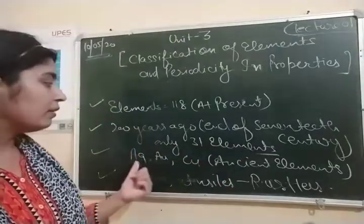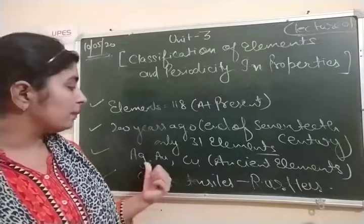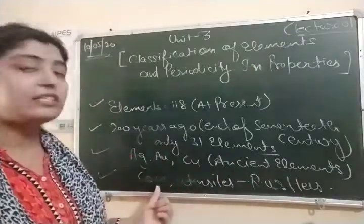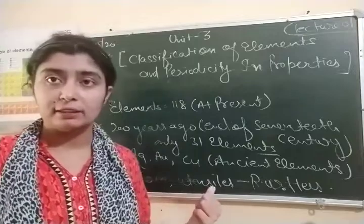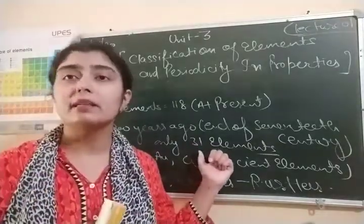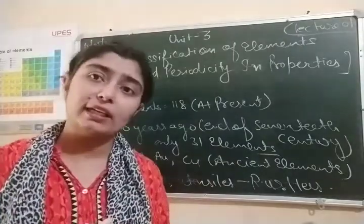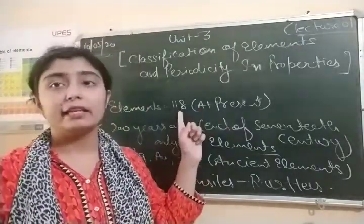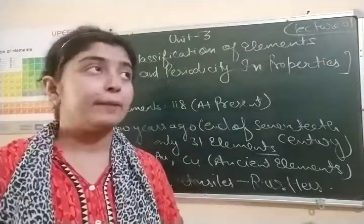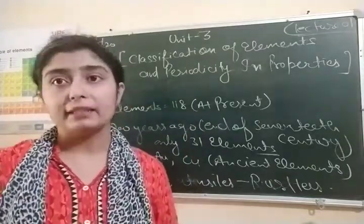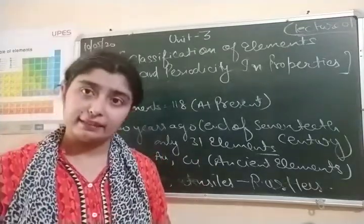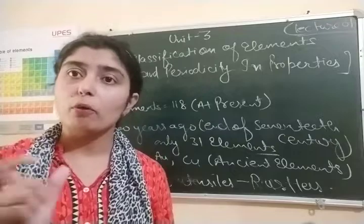At that time, silver, copper, gold - these are not instant elements. These are the elements from which coins were made, utensils were made. So now you know that earlier there were approximately 31 elements. Gradually, more and more elements were added, and at present there are 118 elements, and the discovery of more elements is still ongoing.